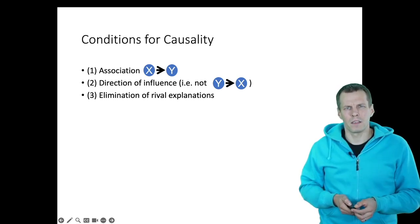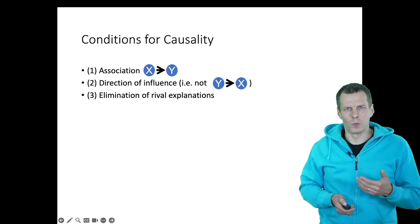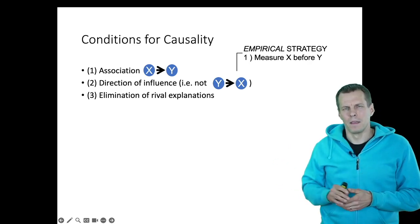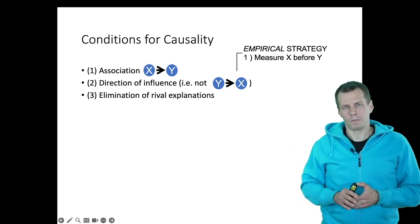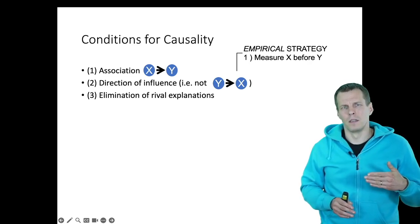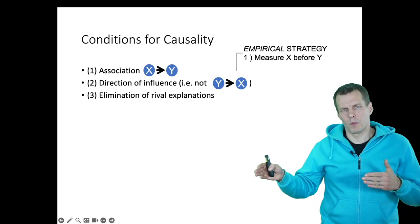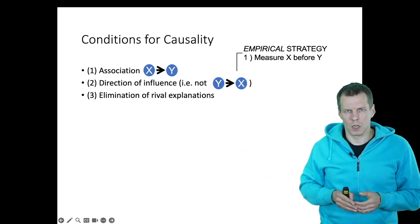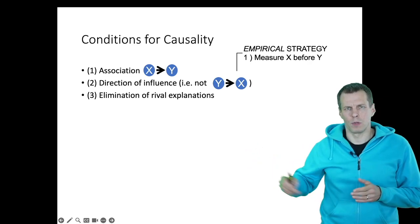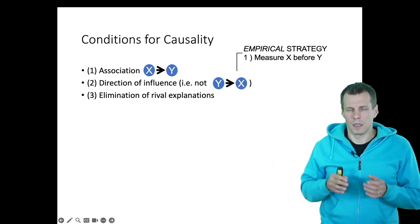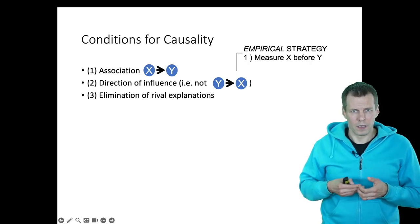A simple strategy for establishing temporal order is measuring the cause before the effect. If we want to understand whether the CEO makes a difference, we need to identify when there is a new CEO and then measure company performance one, two, or three years later. Delaying the measurement of the dependent variable is a fairly common strategy in high-quality quantitative studies.